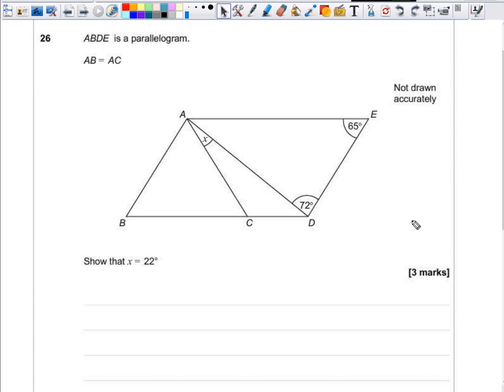Question 26. ABDE is a parallelogram. AB is equal to AC. We have to show that X equals 22 degrees. There's probably quite a few ways of working this out, just use the angle facts that you feel most comfortable with.